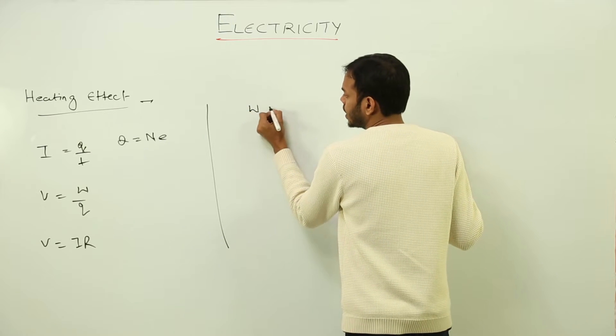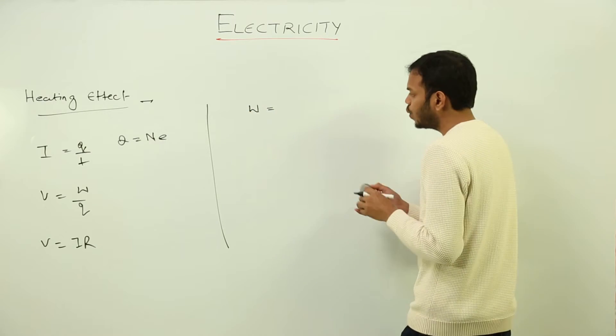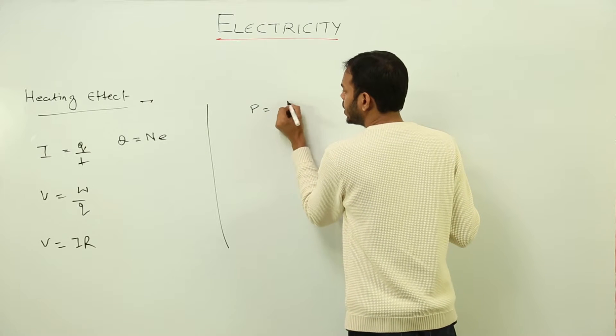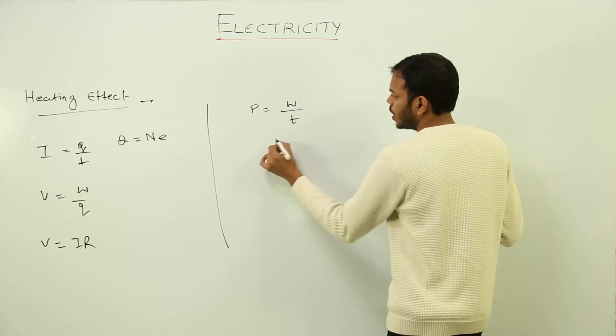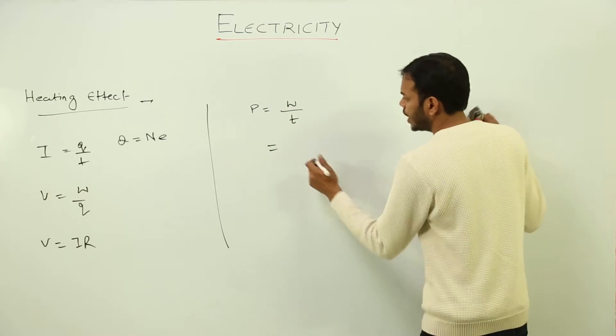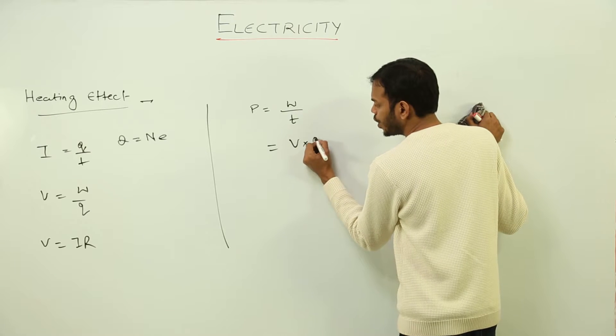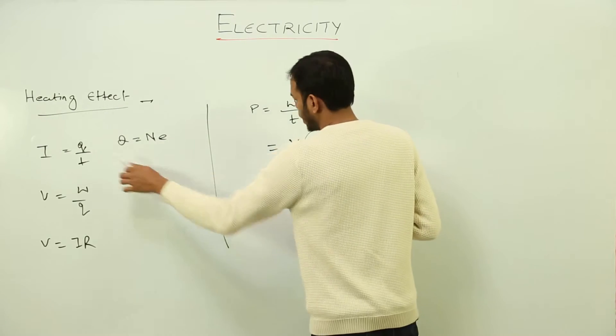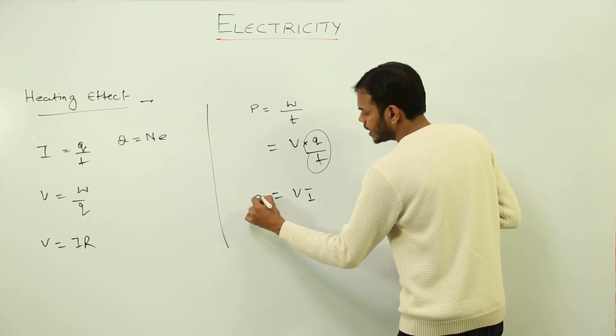So I want to know the value of work. I can do it in terms of power. Power is rate of doing work, work upon time. What is work? Work is potential into charge. So it will give me V into Q upon T. But Q upon T is current. So power is V into I. This is the formula for power.